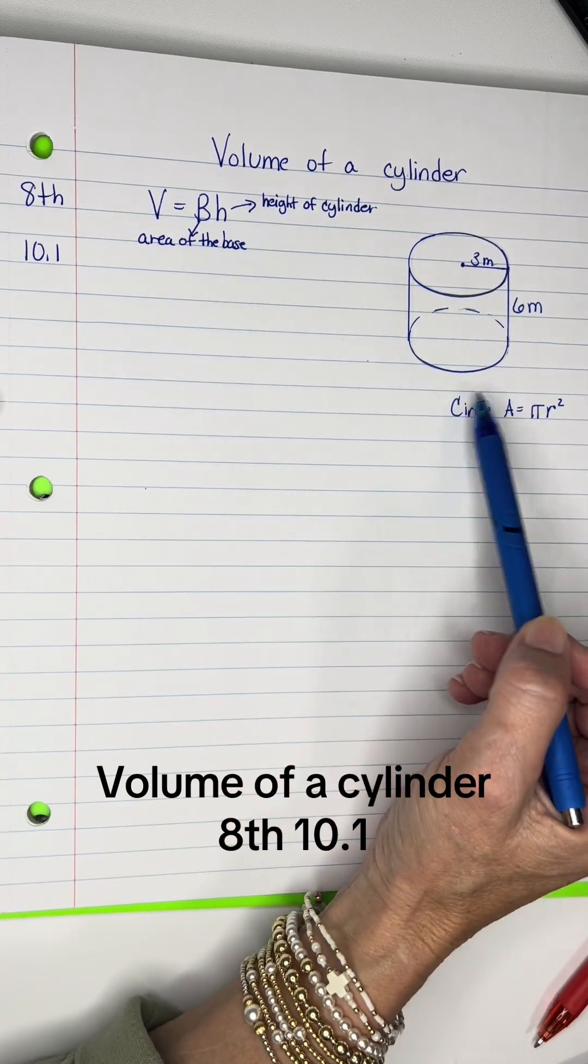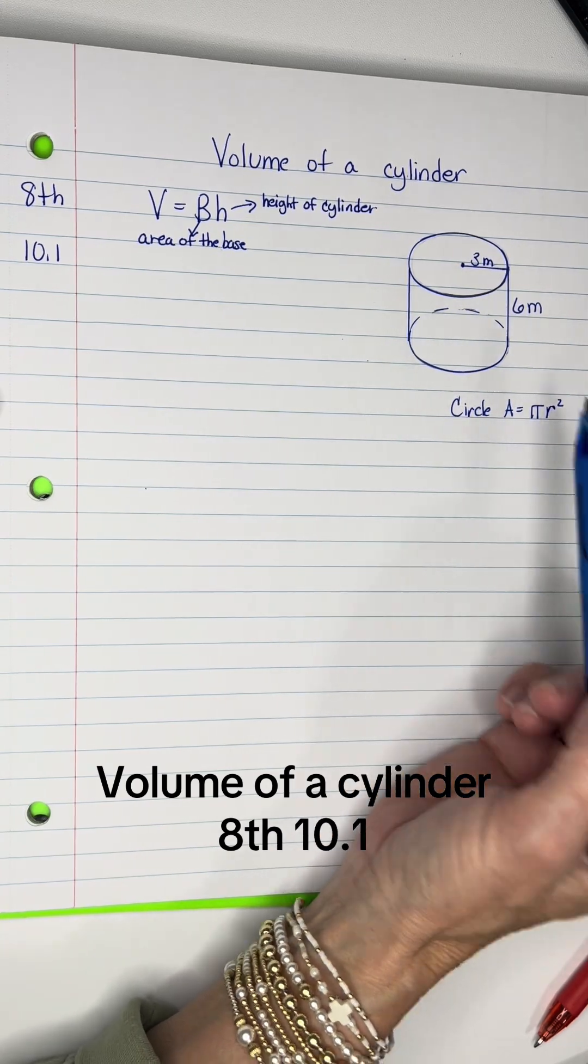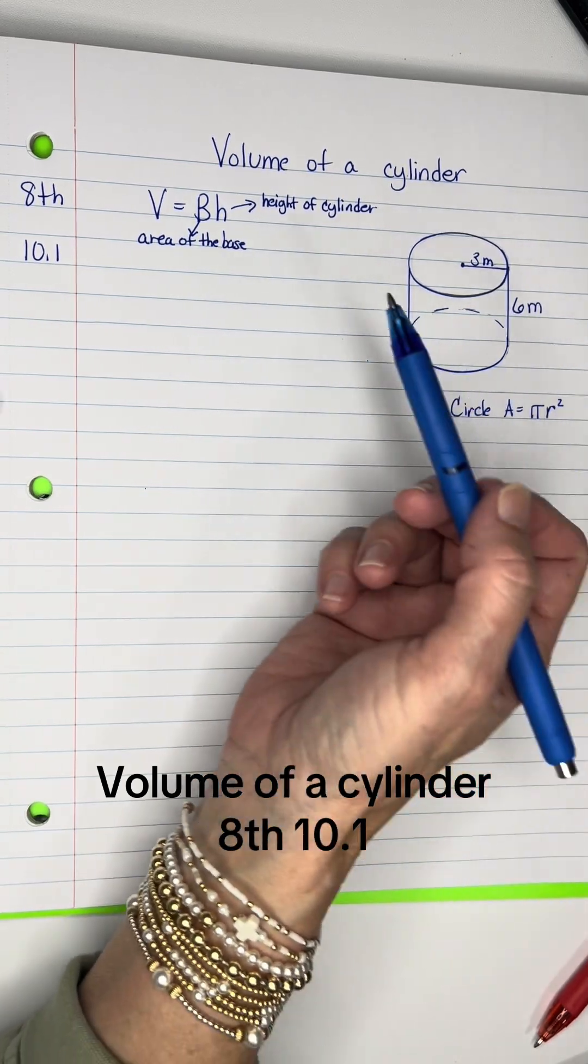So this base right here is a circle, so the area of a circle is pi r squared, and that's what I will use on this. But that same formula, V equals BH, is going to be used for many, many of our videos.